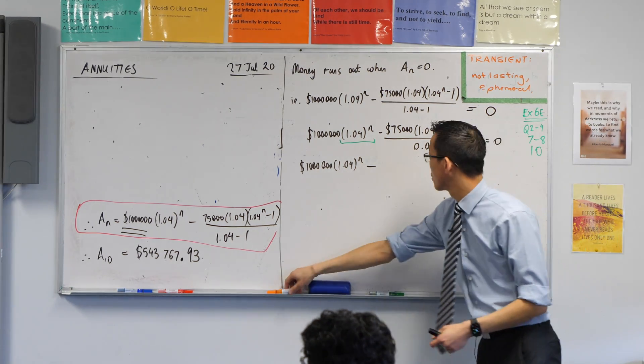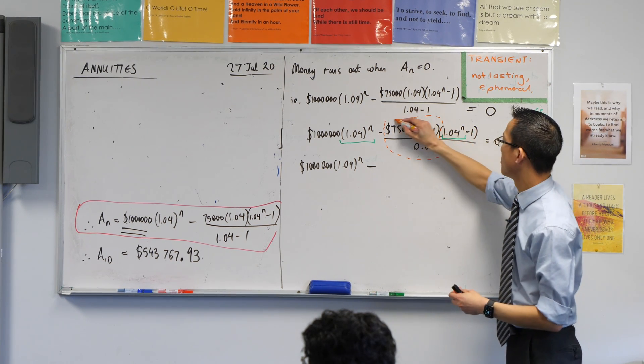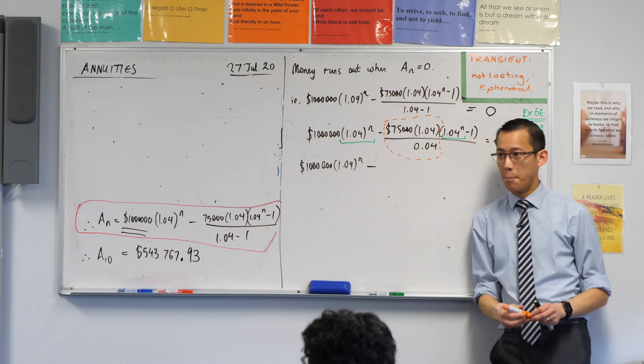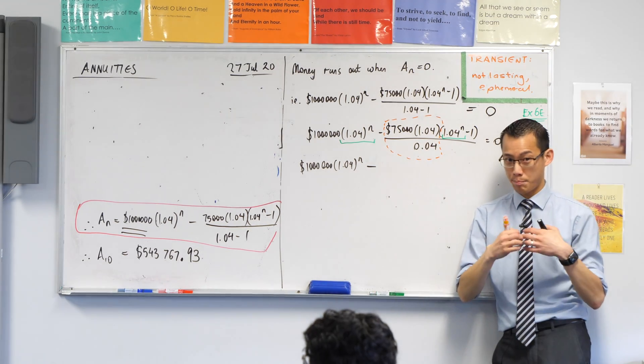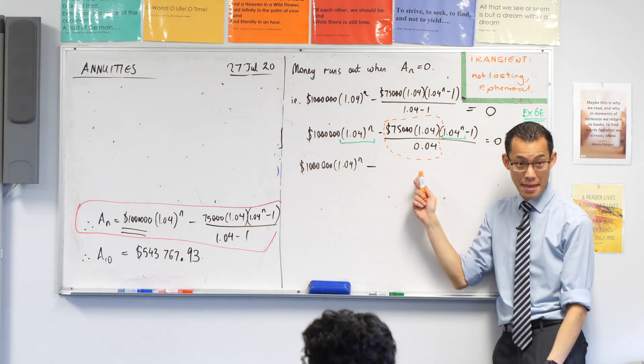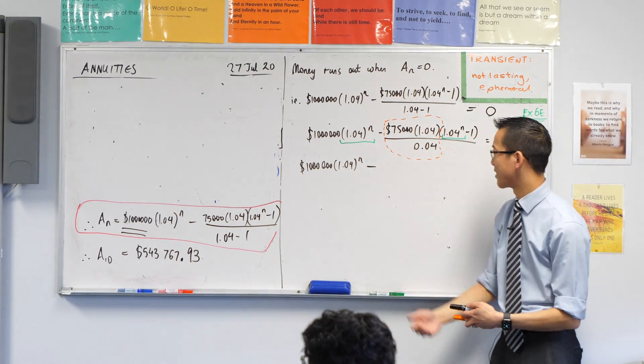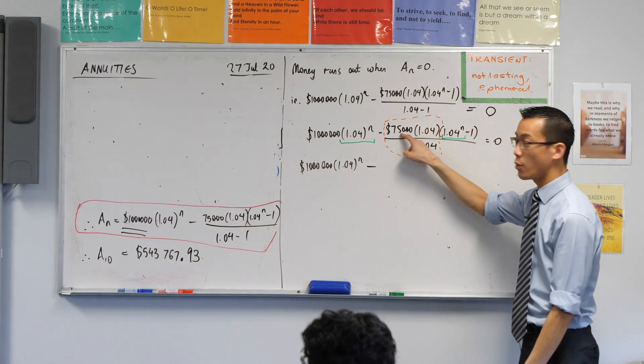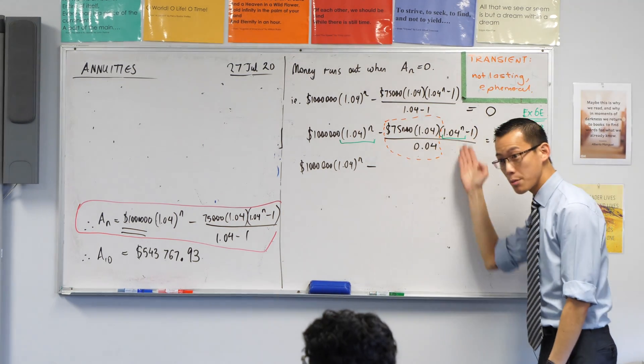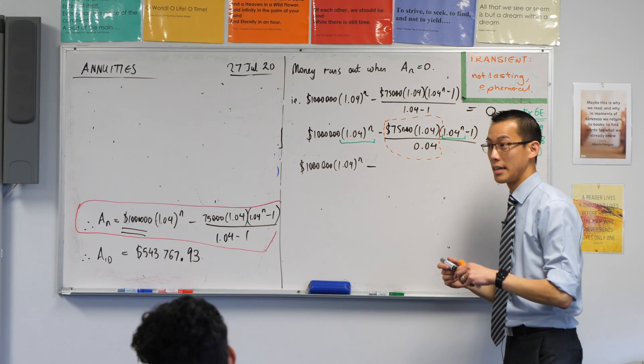For starters, I notice, I'll do it in orange, I notice that all of this stuff, it's just numbers. Do you agree with that? And I can put that into my calculator. This times this divided by that. So if you haven't already, maybe you've already gotten past this line of working in yours, but I haven't. Go ahead, can you work out what 75,000 times 1.04 divided by 0.04, can someone tell me what it is?